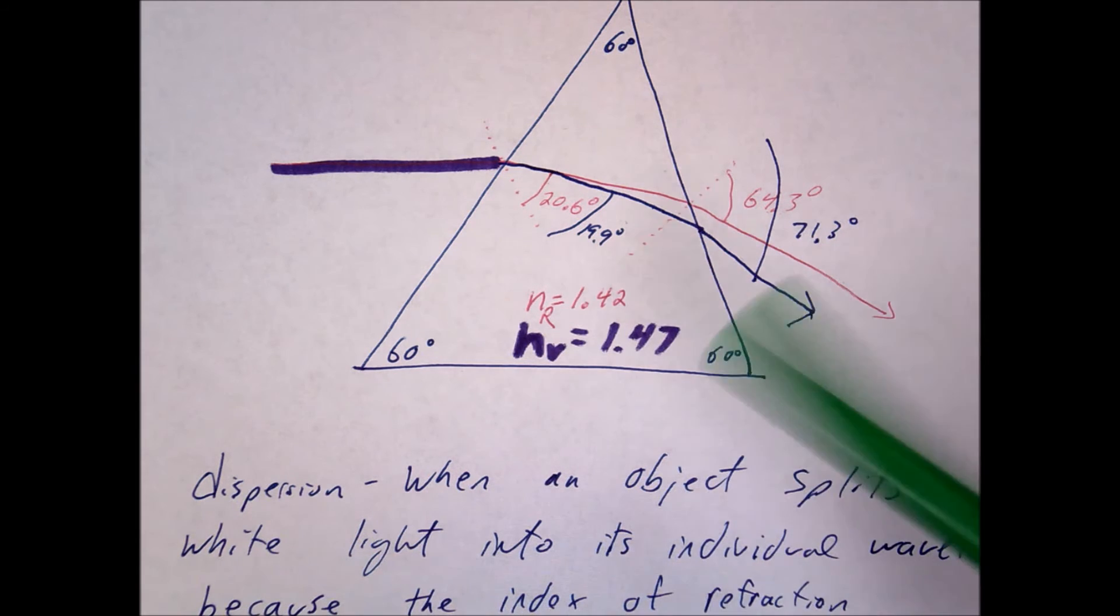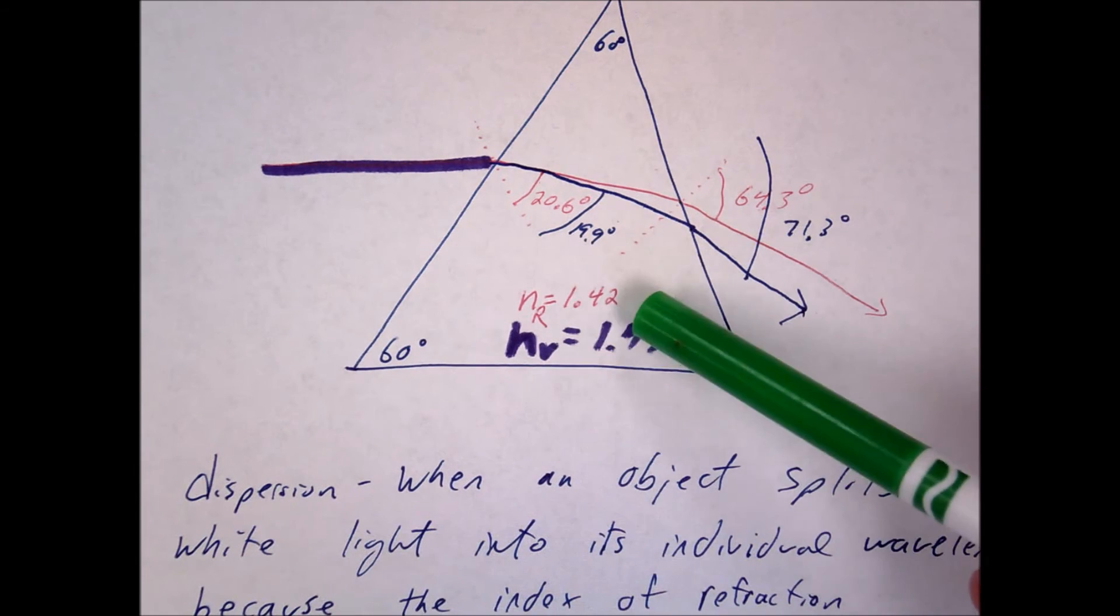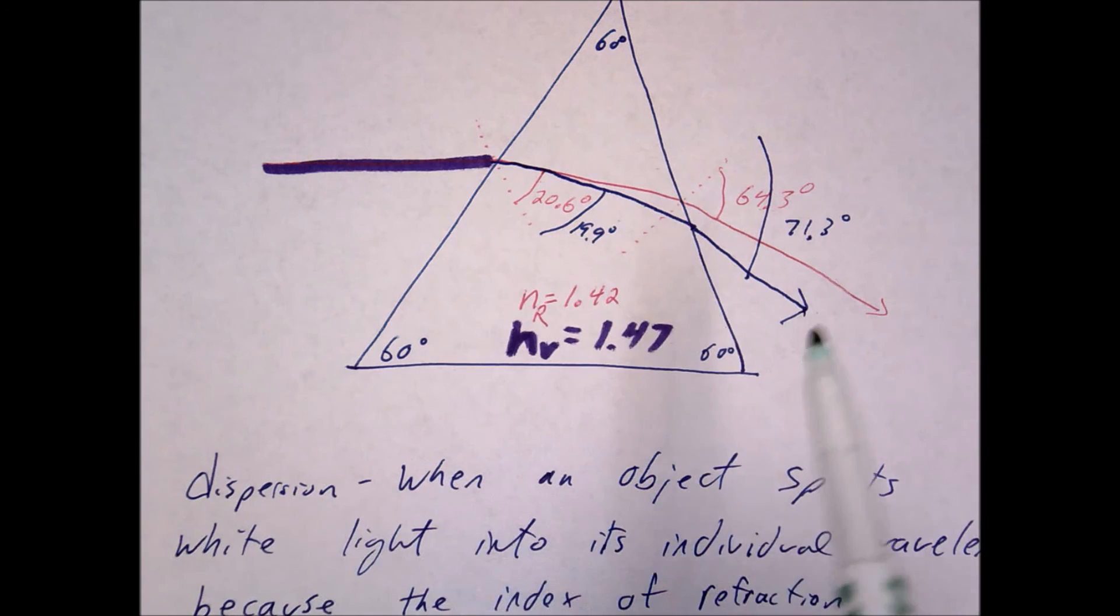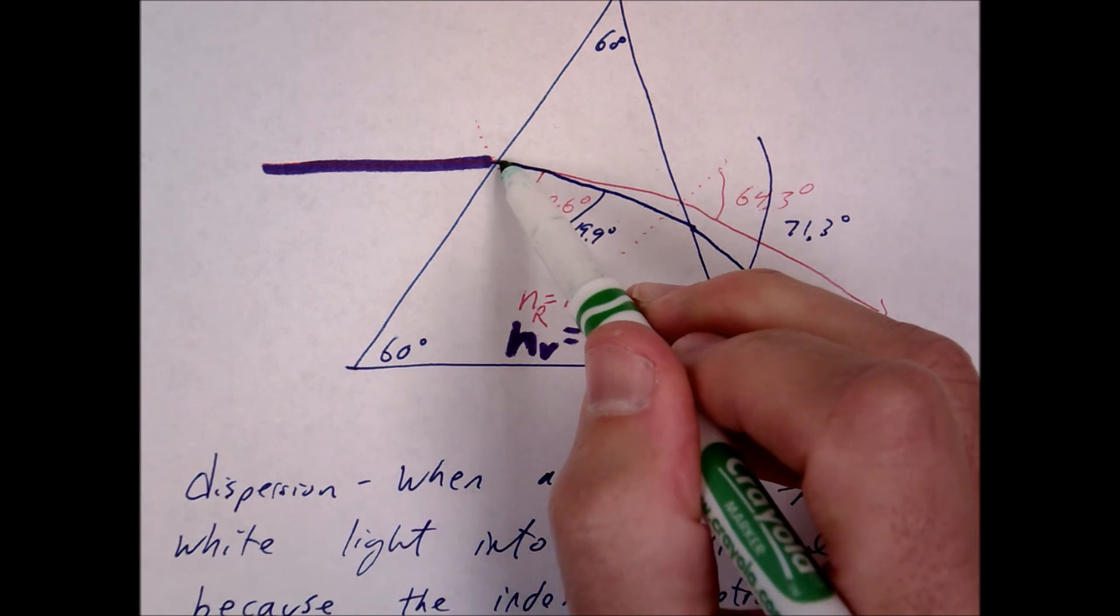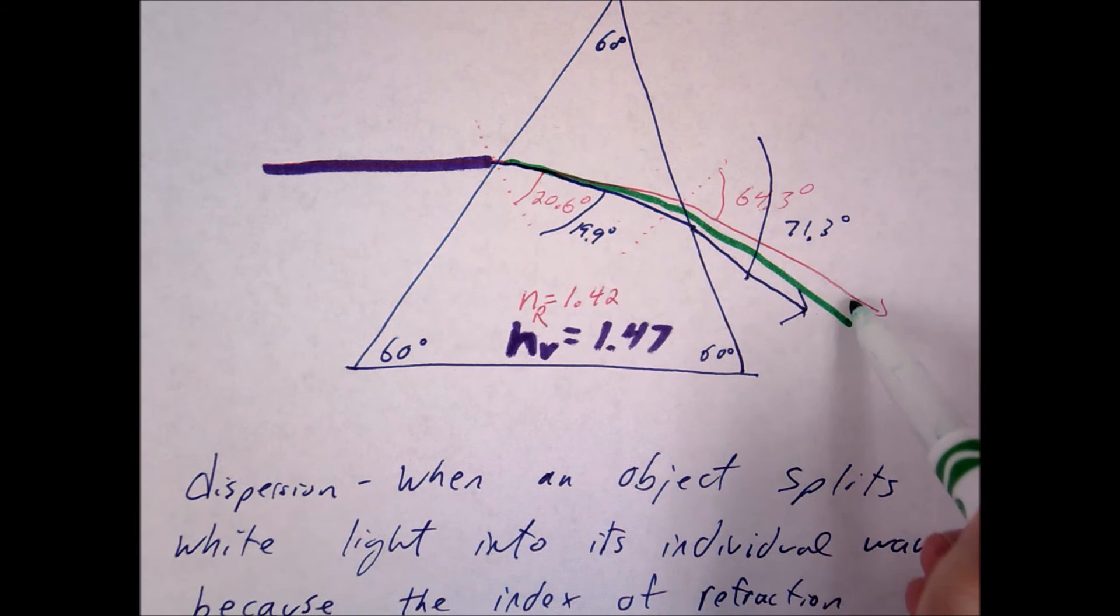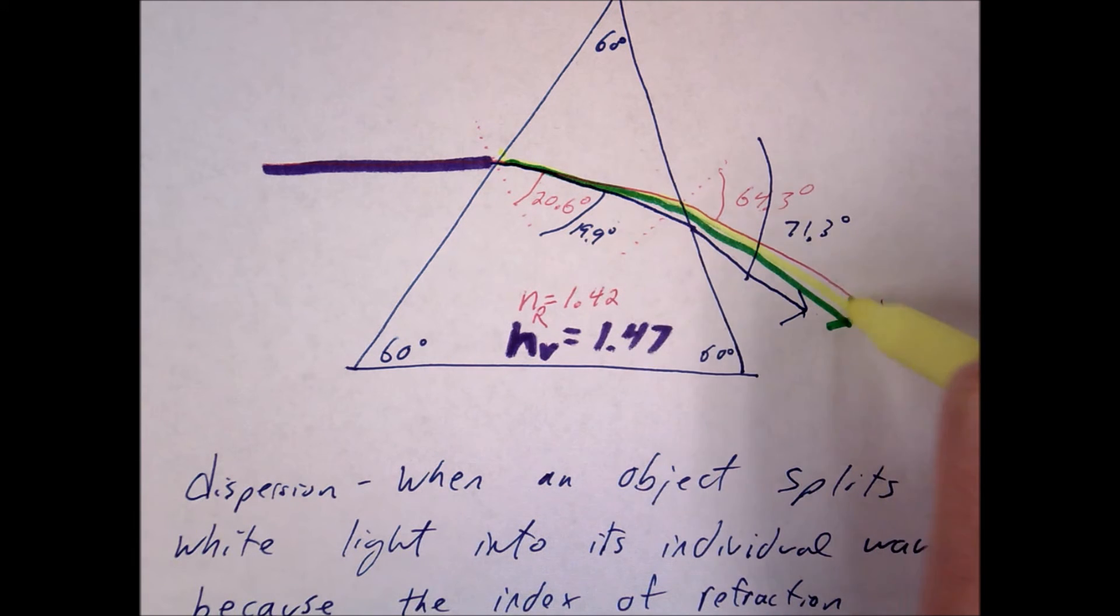Where do you think the index is going to be for green? Somewhere in between, right? So maybe it's like 1.45 or something. So how should I draw my green beam? Right in between. Okay? And how should I draw my yellow? Right in between.